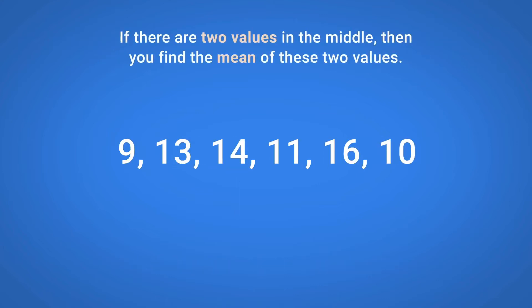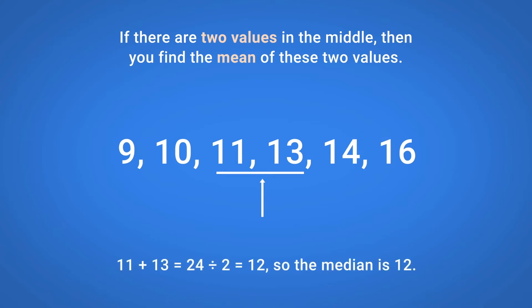If there are two values in the middle, then you find the mean of these two values. Here is a different set of data. If we put the data in numerical order, we can see that there are two values in the middle: 11 and 13. The Median is found by working out the mean of these two values. 11 plus 13 equals 24, divided by 2 equals 12. So the Median is 12.